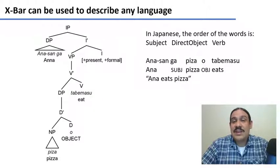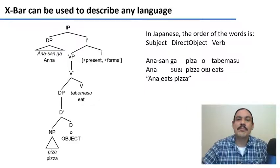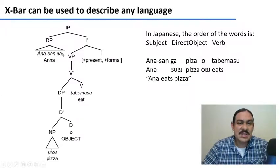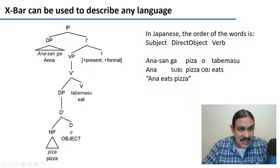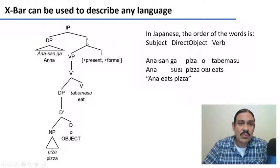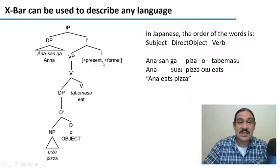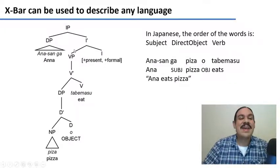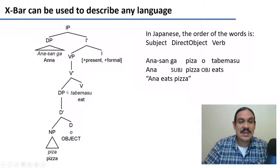There's a third and very interesting property of these trees: they can be used to describe any human language. This is a sentence from Japanese, for example: 'Ana-san ga pizza wo tabemasu'—Ana eats pizza. As you can see, we have the subject, Ana-san ga, in the specifier position of the IP. We have here that the inflected verb is present and formal because Japanese conjugates verbs for formal forms. And here we have the verb phrase with the head of the verb, to eat, tabemasu, and the direct object, pizza wo, the pizza.